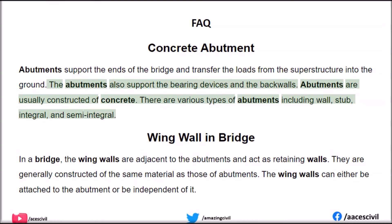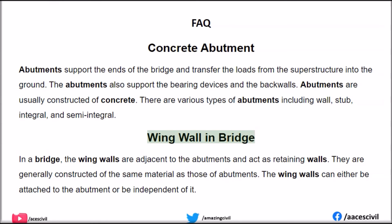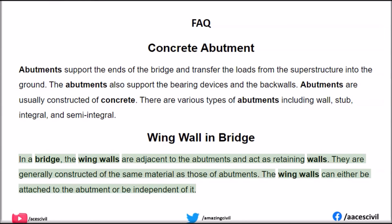Abutments also support the bearing devices and the back walls, and are usually constructed of concrete. There are various types of abutments including wall, stub, integral, and semi-integral. In a bridge, the wing walls are adjacent to the abutments and act as retaining walls. They are generally constructed of the same material as the abutments. The wing walls can either be attached to the abutment or be independent of it.